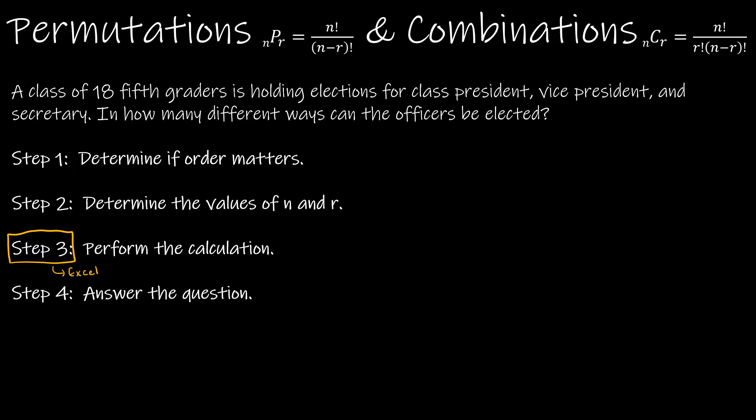Step 1: determine if order matters. A class of 18 fifth graders is holding an election for class president, vice president, and secretary. How many ways can the officers be elected? A lot of people struggle with this one and say order doesn't matter, but it does — if Joe Schmoe is president and Sally Sue is vice president, that's different from Sally Sue being president and Joe Schmoe being vice president. So yes, order matters, which means it's going to be a permutation.